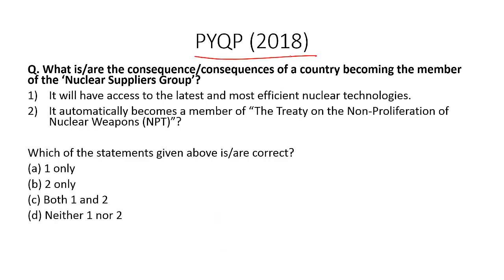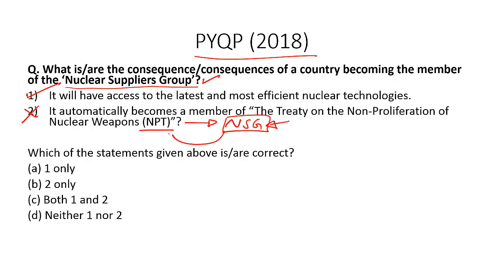From the 2018 prelims paper: What is the consequence of a country becoming a member of the Nuclear Suppliers Group? Statement one — it will have access to the latest and most efficient nuclear technologies — is correct; once you become a member of the NSG, you can access the latest nuclear technology. Statement two — it automatically becomes a member of the Non-Proliferation Treaty — is wrong; in fact, signing the NPT is a precondition to become a member of the NSG. The right answer is option A.